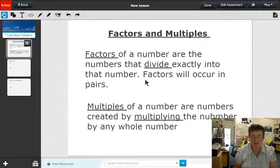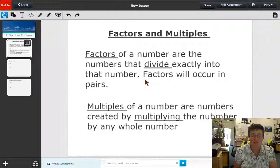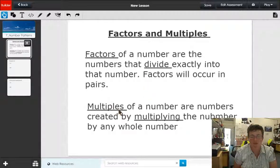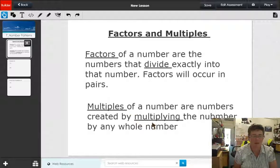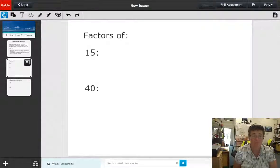Unless it's a squared number, like nine where one of the factors is three, so three times three is a pair. On the other hand, the multiples of a number are the numbers created by multiplying that number by any whole number. So let's have a look at some factors and some multiples.